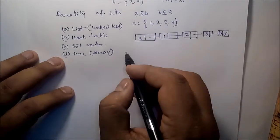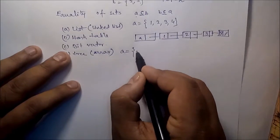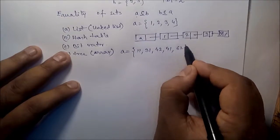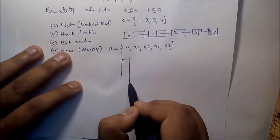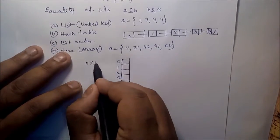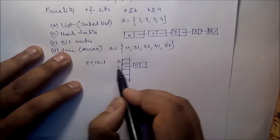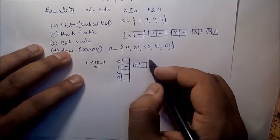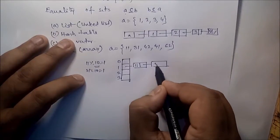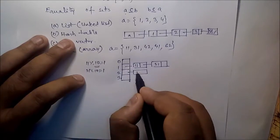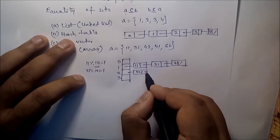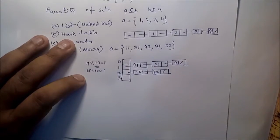We may also use a hash table to store the set. Suppose A = {11, 31, 42, 41, 62}. Using a hash function modulo 10: 11 mod 10 = 1, so store 11 at index 1. 31 mod 10 = 1, so store 31 at index 1. 42 mod 10 = 2, store 42 at index 2. 41 mod 10 = 1, store 41 there. 62 mod 10 = 2, store 62 at index 2. This is how set data can be stored using a hash table.